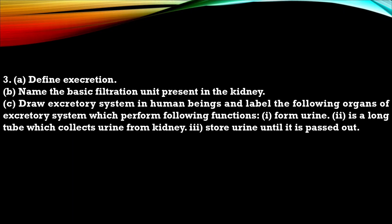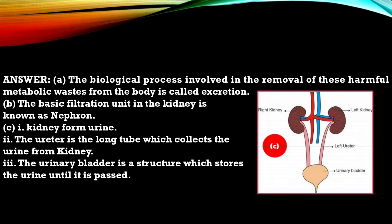Question 3. A. Define excretion. B. Name the basic filtration unit present in kidney. C. Draw excretory system in human being and label the following organ of excretory system which perform following function. 1. Form urine. 2. Is a long tube which collect urine from kidney. 3. Store urine until it is passed out. So this is the answer for your third question and diagram of excretory system.